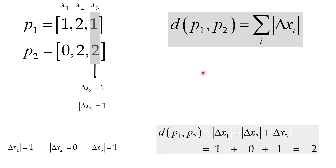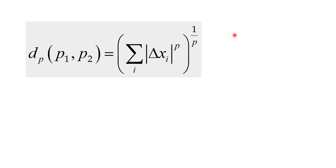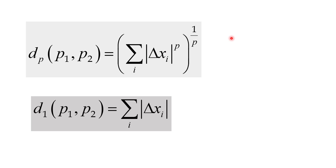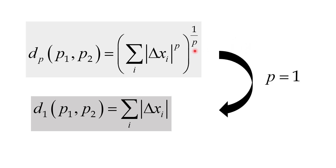Now let's talk about another distance called the norm P distance. Here is the formula for the norm P distance. The Manhattan distance is a special case of the norm P distance in which P is equal to 1. So if you put P equal to 1 in this formula, you will get the Manhattan distance. Remember: Manhattan distance is a special case of norm P distance where P equals 1.